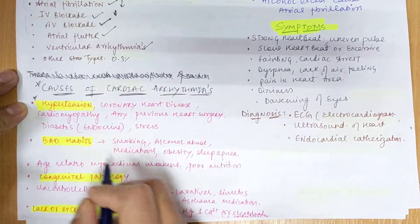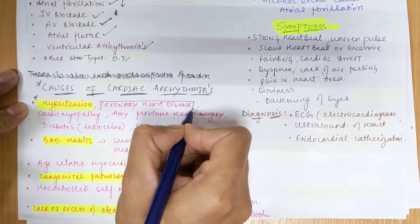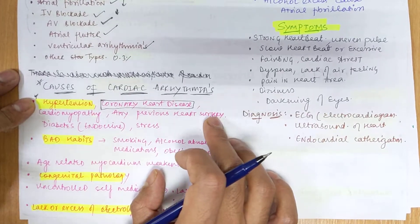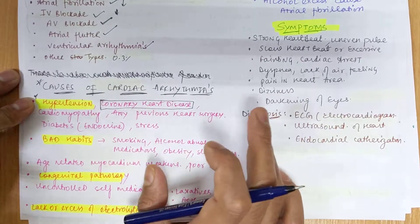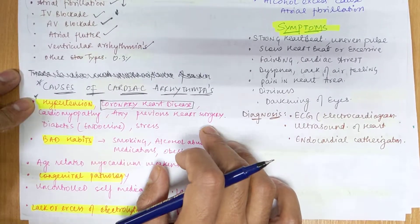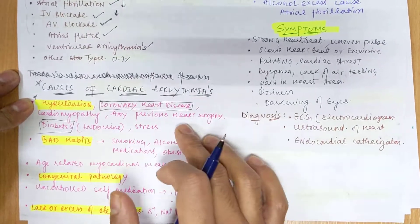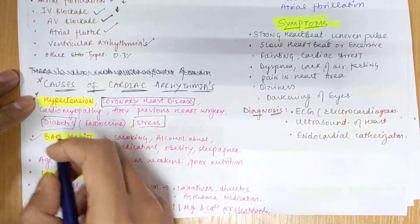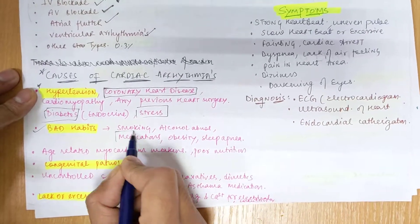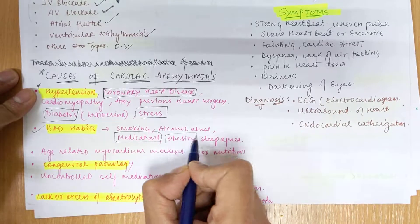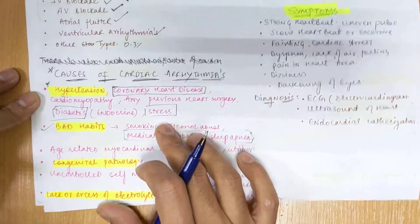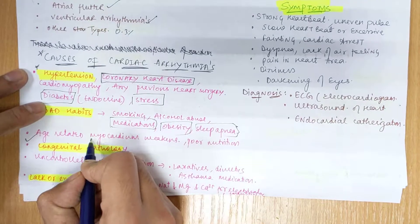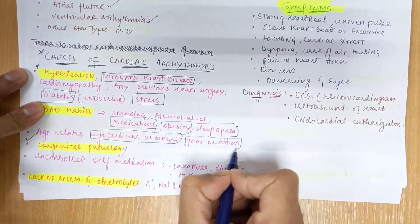What can be the causes of cardiac arrhythmia? Causes include hypertension, coronary heart disease, cardiomyopathy, previous heart surgery, stenting, or pacemaker implantation. Endocrine disorders such as diabetes or thyroid disorders can also be causes, as can stress, bad habits like smoking and alcohol abuse, extra medications, obesity, and sleep apnea. Age-related factors are also relevant, as older people are more prone to cardiac arrhythmias since the myocardium weakens with age.